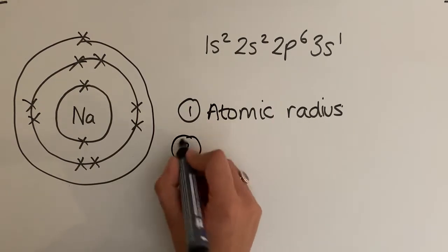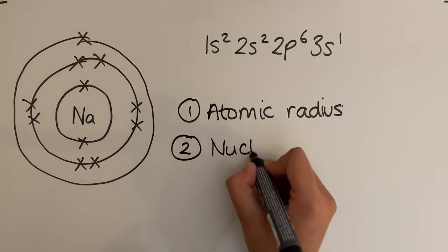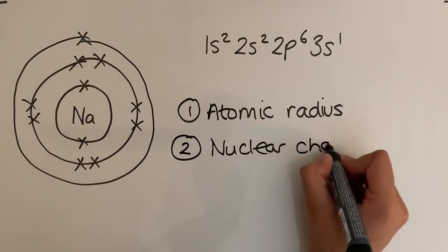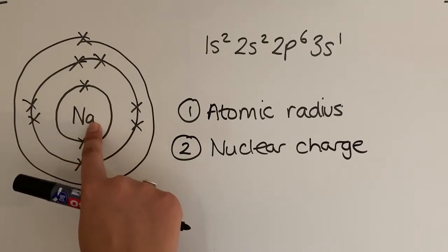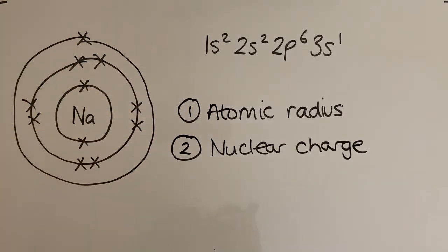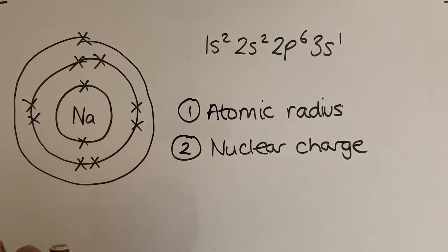The second factor is nuclear charge — essentially how many protons are in the nucleus. The more protons you have in the nucleus, the more attraction it will have to the negative electron, and therefore the greater the nuclear attraction and the more energy required to remove the outer electron.